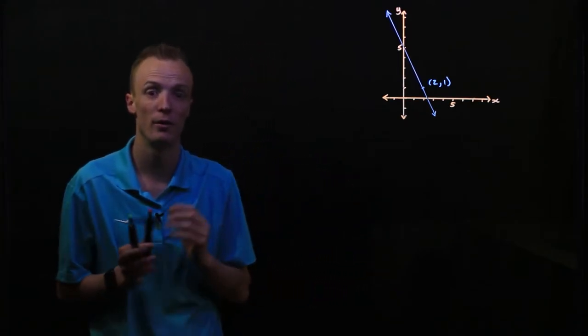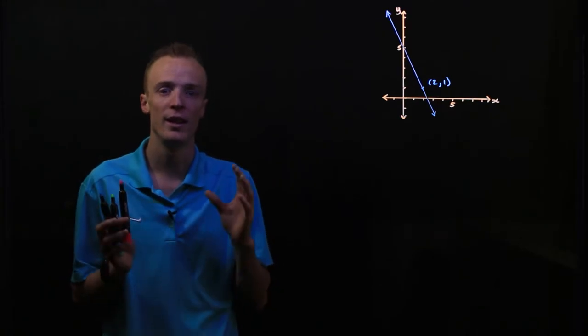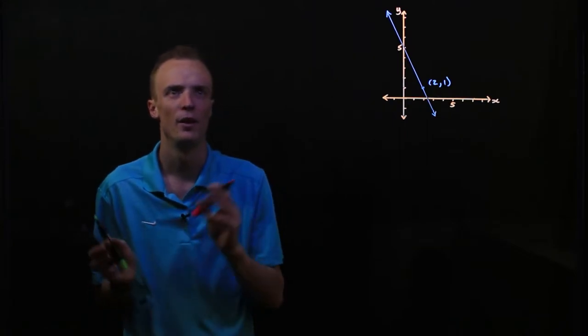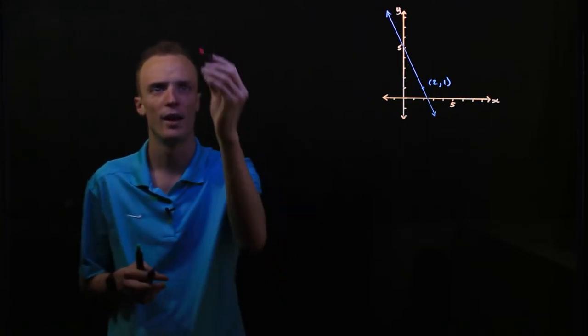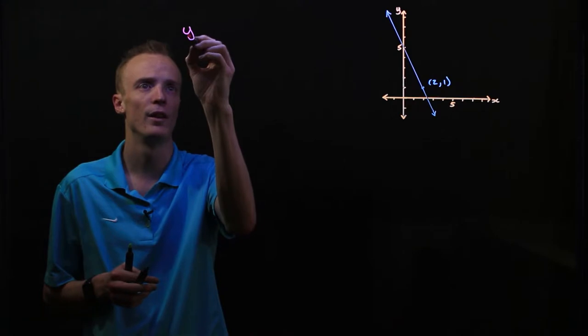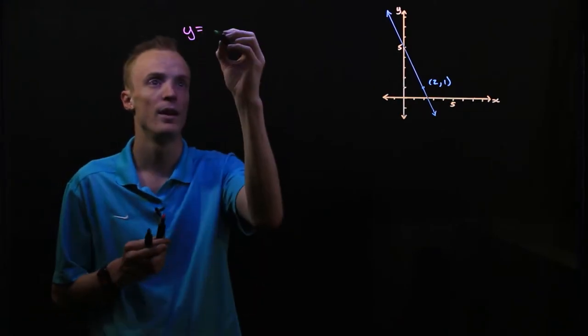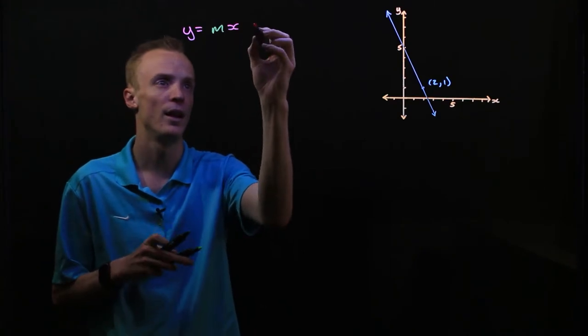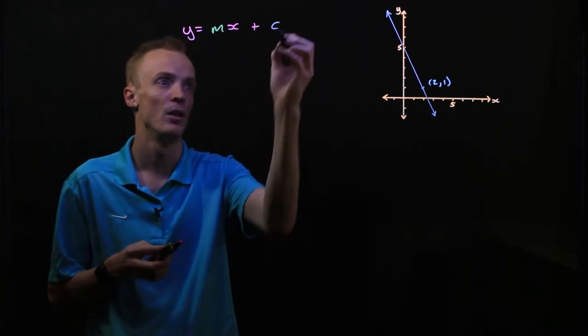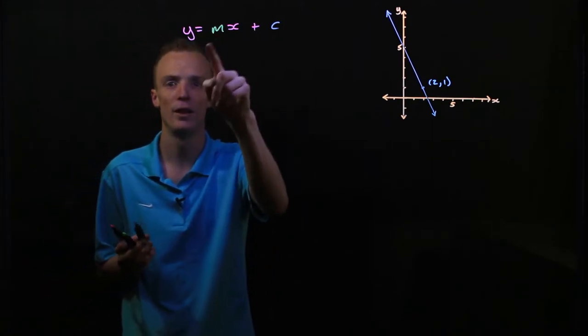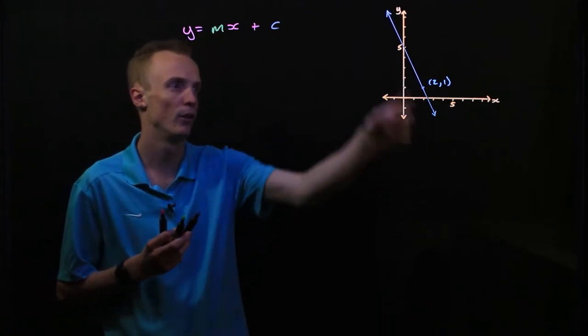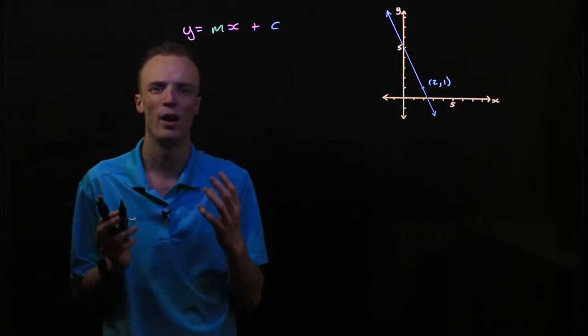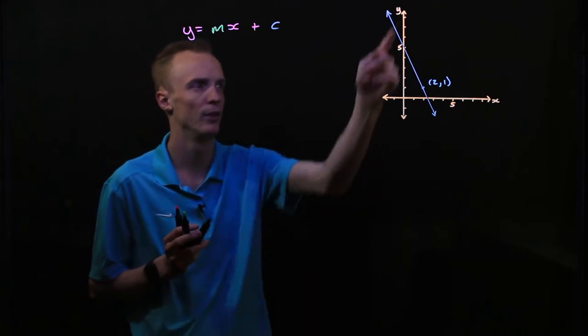One such form that I can represent my equation in is what's known as y-intercept form. Y-intercept form says we can represent equations that look like y equals m multiplied by x and then plus c, where our m value is the gradient or slope of our linear line and our c value is the y-intercept or where it cuts through this y-axis.